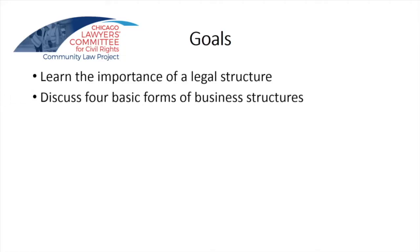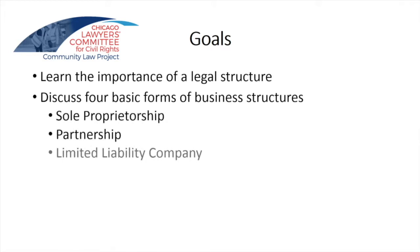The main entities that we'll cover today are the sole proprietorship, the partnership, the limited liability company, and the corporation. There are different kinds of corporations and different kinds of partnerships. We'll also cover cooperatives very briefly — it's a little bit more involved process, but it's something that's good to know about as well.